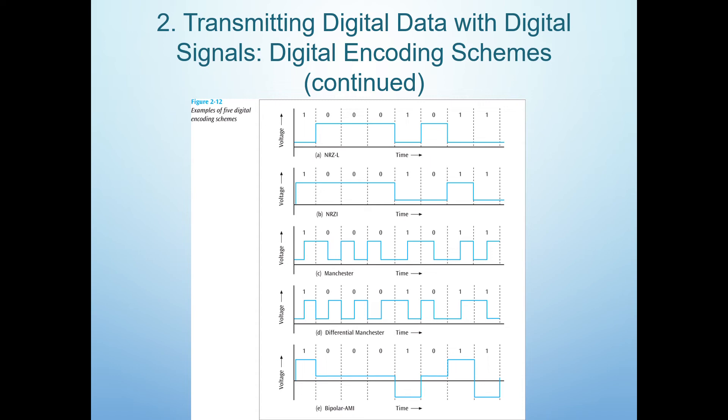The problem with NRZL and NRZI digital encoding is that long sequences of zeros in data produce a signal that never changes, making it difficult for a receiver machine to distinguish between 0 and 1. This problem is called a synchronization issue.